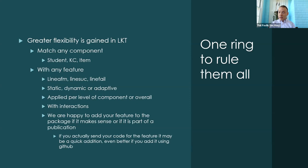There's a question in the chat about how the model accounts for skewness in the beta value — it could be the case that higher-knowledge students go through the material at a quicker pace than lower-knowledge students.